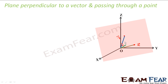So if you see, this is r, this is a, this is r minus a. And now if you see properly, r minus a and the n vector are both perpendicular to each other. The n vector is perpendicular to this plane, and r minus a is in this plane. So r minus a and n are perpendicular — r minus a vector is perpendicular to n vector.